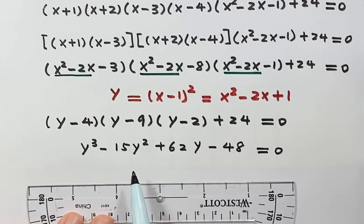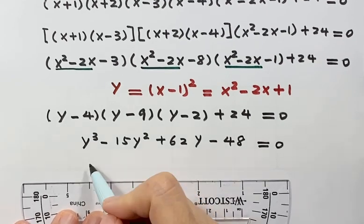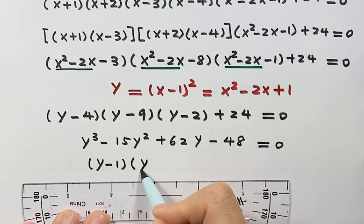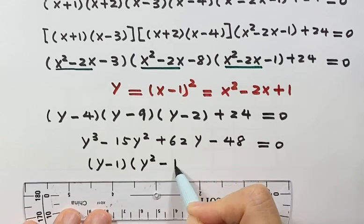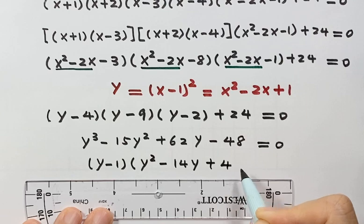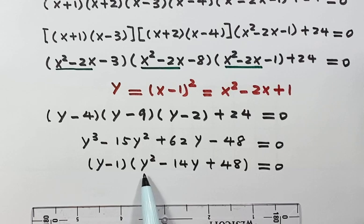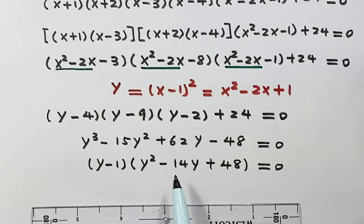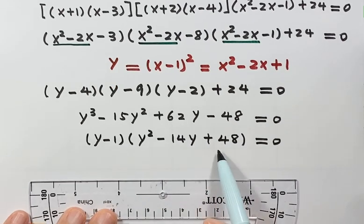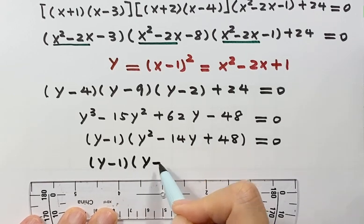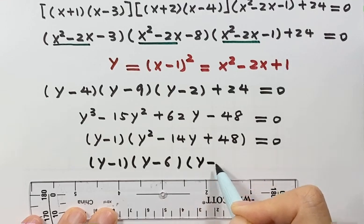For this equation, we can easily tell y equals 1 is a solution. So we can write it as (y minus 1)(y squared minus 14y plus 48) equals 0. Using long division because y minus 1 is a factor, we can continue to factor this part as (y minus 1)(y minus 6)(y minus 8).